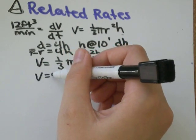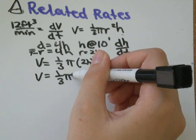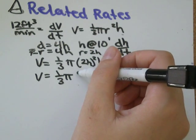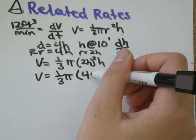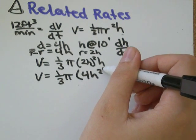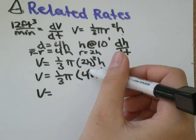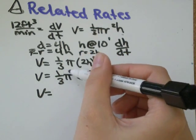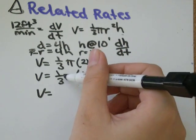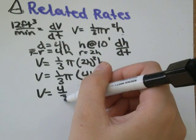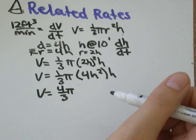So I'm just going to simplify our formula a little bit. 2h squared would be 2 squared is 4, h squared is just h squared times h. So let's put the 4 with the rest of our numbers over here. 4 times a third would be 4 over 3 pi.